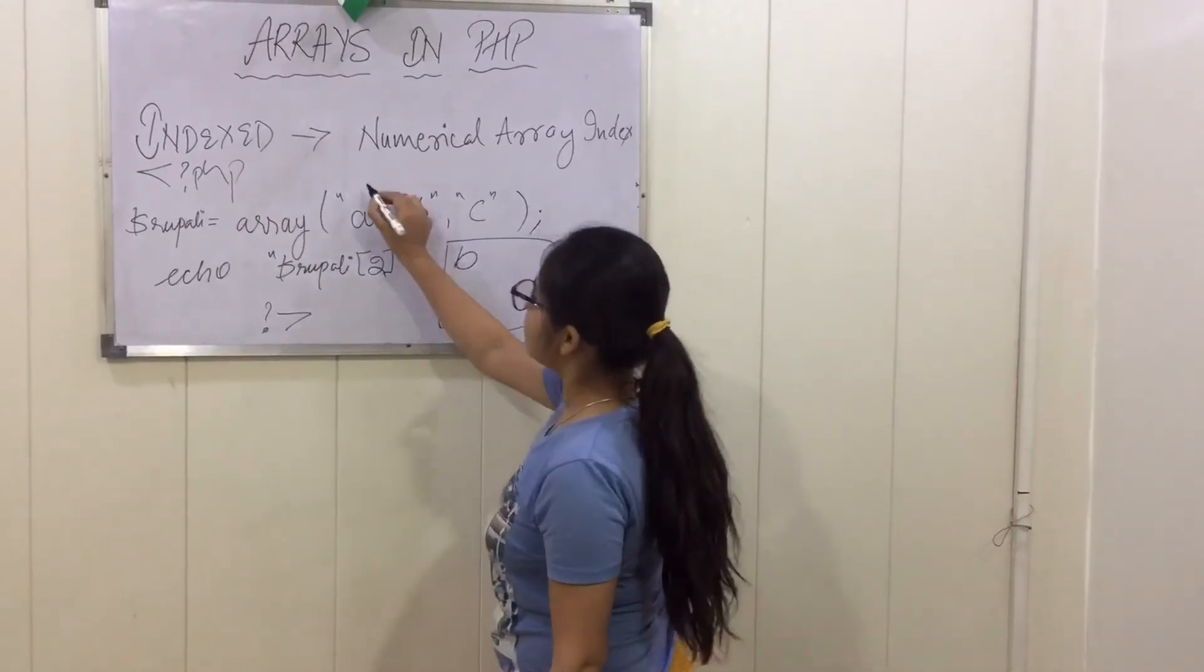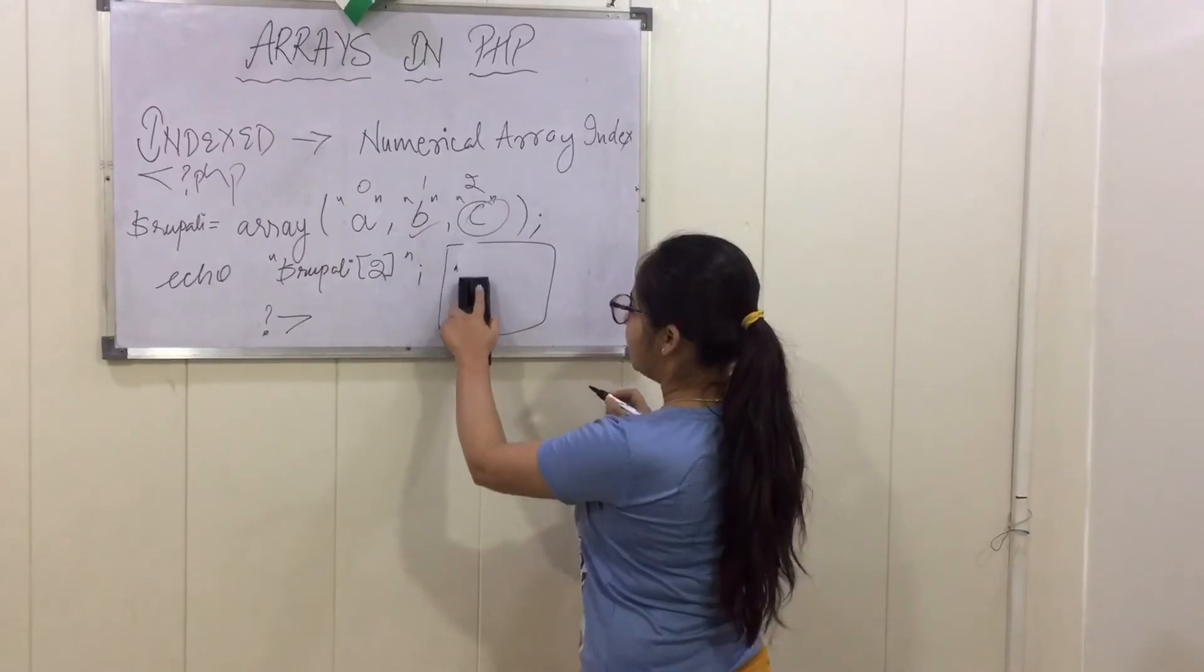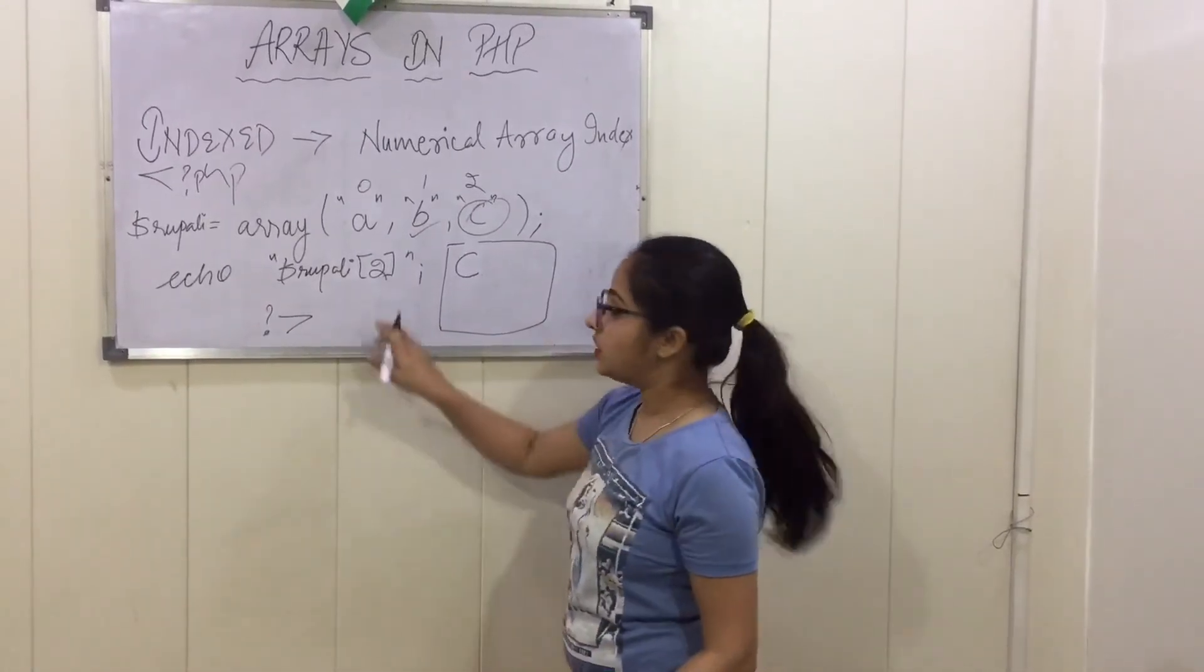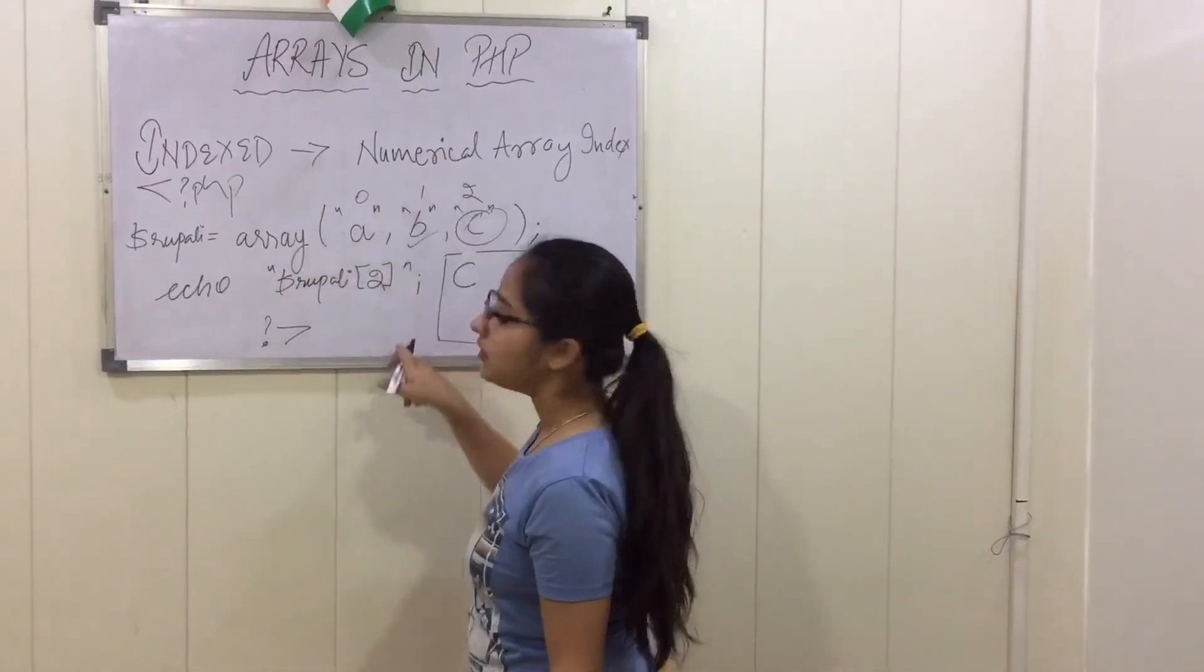If I have printed 2, that is 0, 1 and 2, so this array will be printed here, that is C. So in this way we can use the arrays of indexed array in PHP.